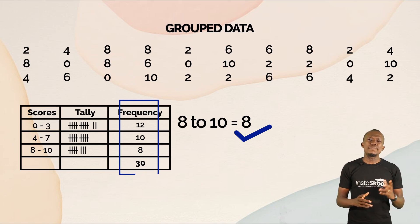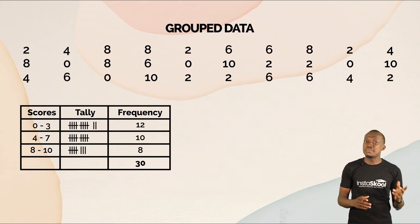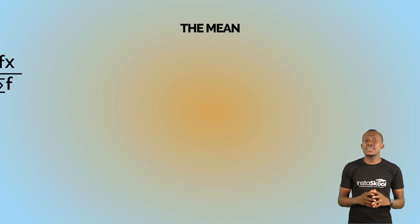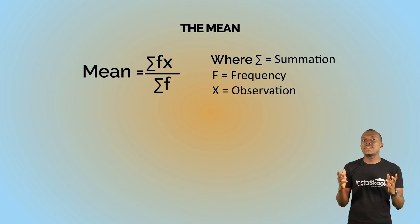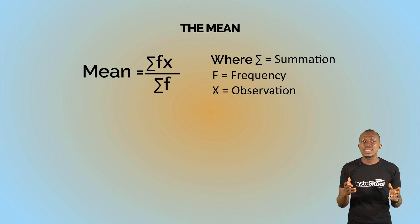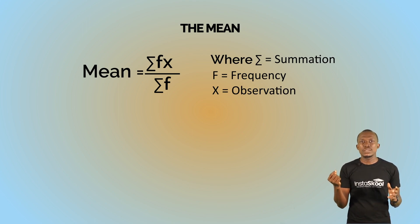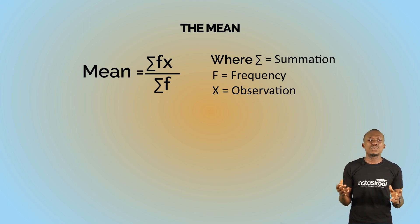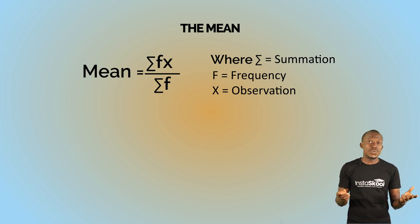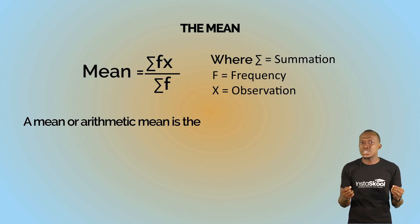Now to calculate the mean for group data, our formula is the summation of fx — which is the summation of the frequency times x, the midpoints — divided by summation f. You will recall that the arithmetic mean is the average of a set of data. Now let's look at this example.